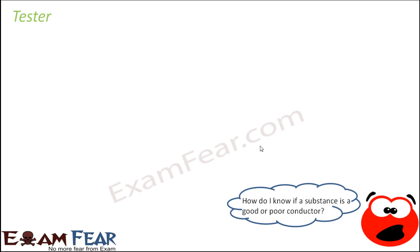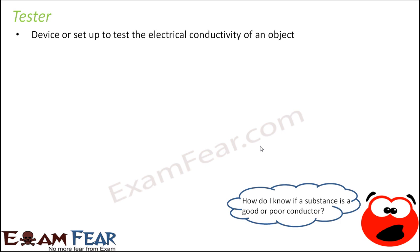There are so many other substances around us, and to determine which ones allow electricity to pass through, we make use of a device called a tester. The job of this tester is to test the conductivity of a substance, whether it is a solid or a liquid. Conductivity means the property of a substance to conduct electric current — how well or how badly it allows electric current to pass through it.